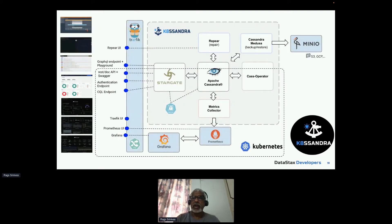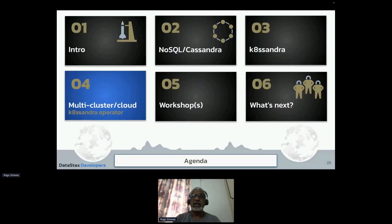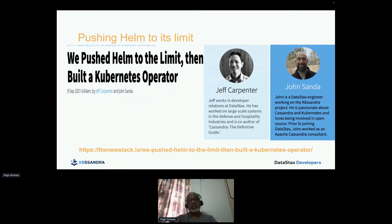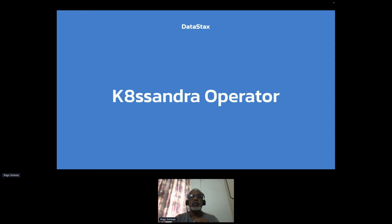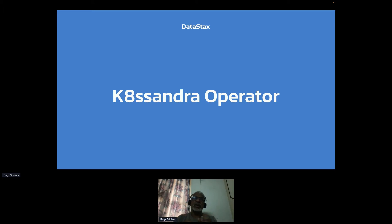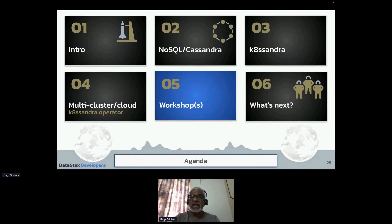This is K8ssandra — it has different components. The installation is very straightforward: you just do a Helm repo add, and there are several workshops which go through that. One of the cool things about K8ssandra is that it's also multi-cluster cloud. We recently introduced something called the Cassandra operator, which makes it very easy — we push Helm to the limit and built this operator for multi-cluster. The Cass operator, also leveraged by the Cassandra operator, installs Cassandra on the respective clusters, and the Cassandra operator makes it a multi-cluster setup as well.